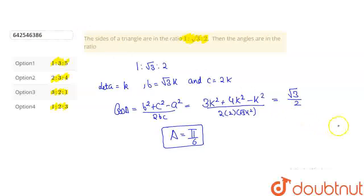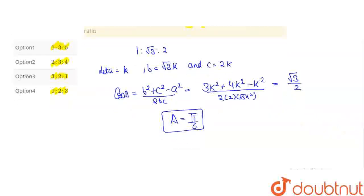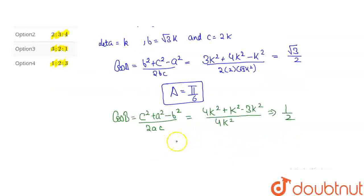Now using the formula cos B = (c² + a² - b²) / 2ac, we will get (4k² + k² - 3k²) / 4k², which gives us 1/2. So the value of angle B would be π/3.